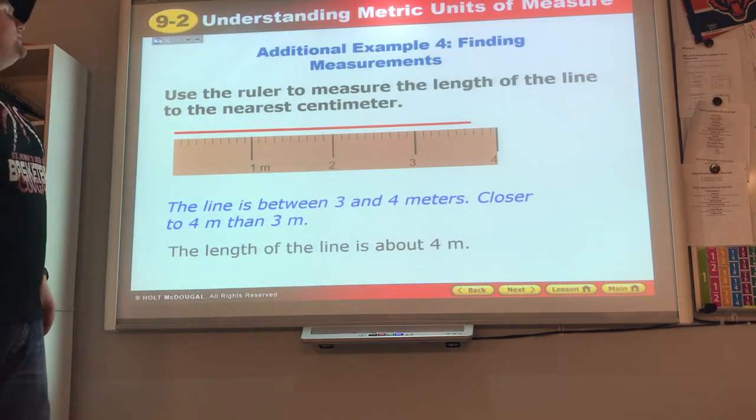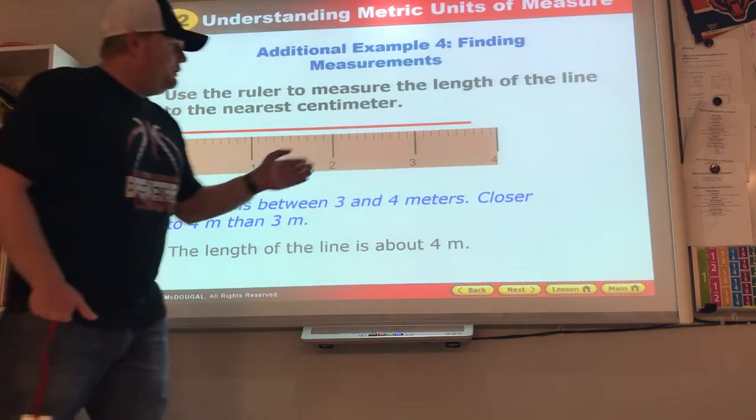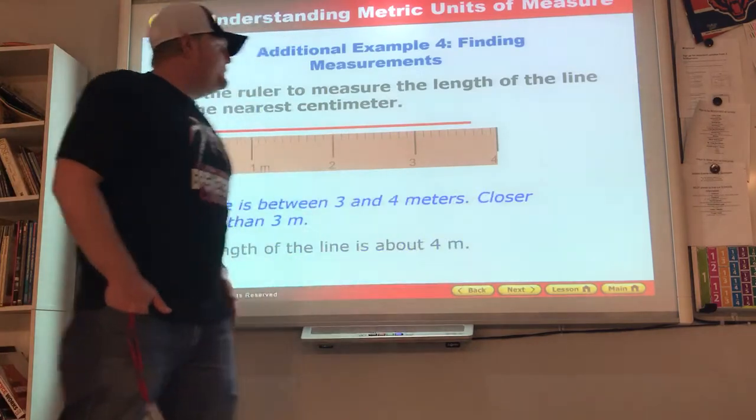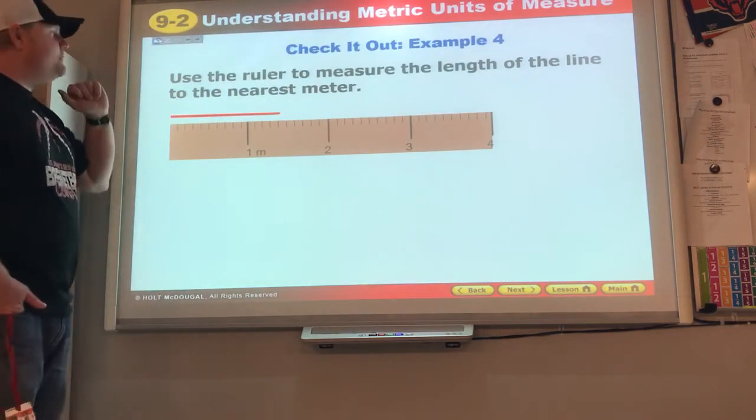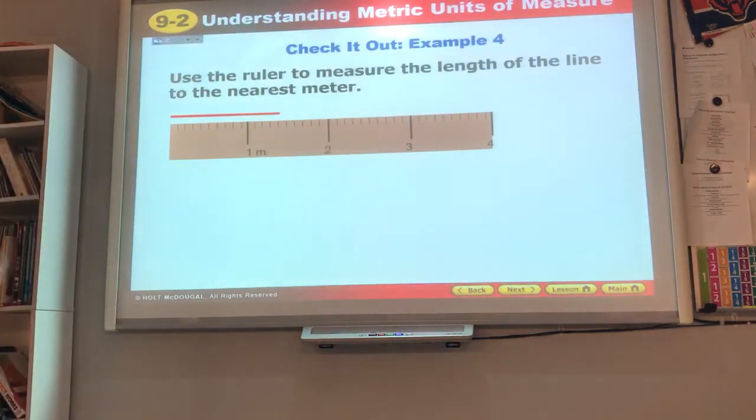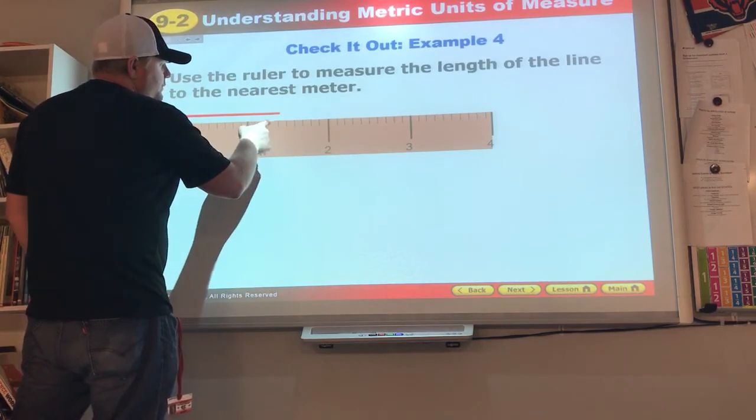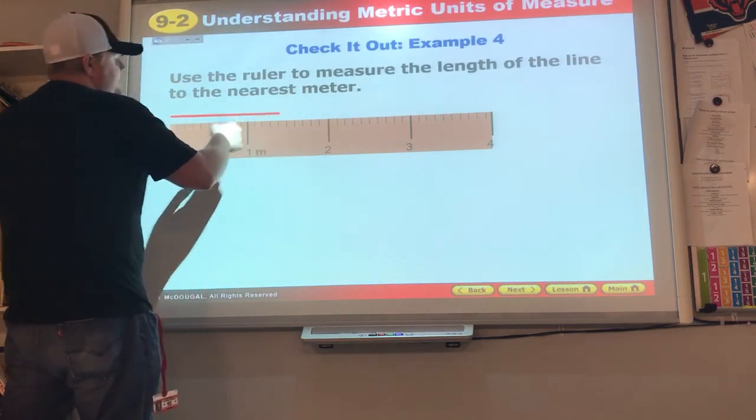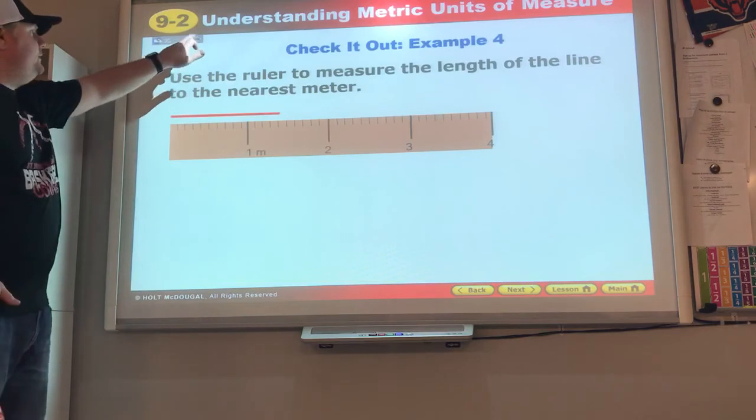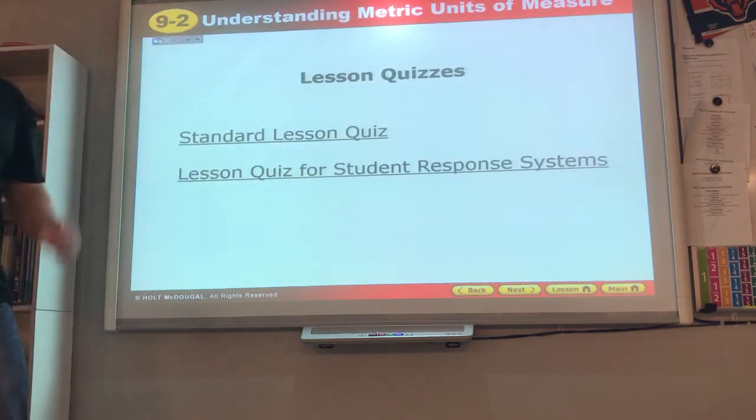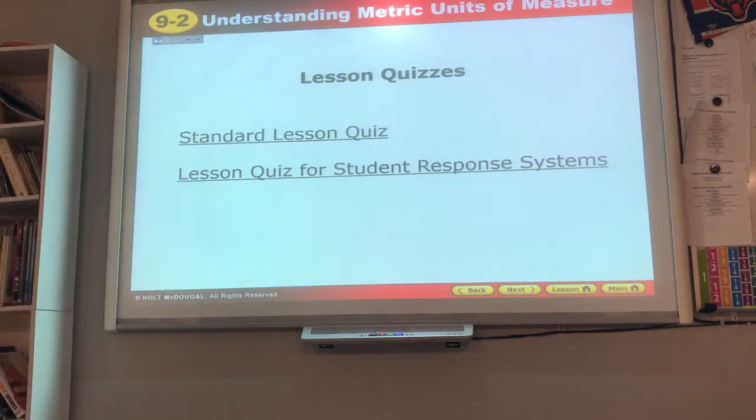So the length - oh, it says to the nearest centimeter, but they actually have you go to the meter. Well, I call it four meters. Use the ruler to measure the length of the line to the nearest meter. There are ten between these. This one gets you the one, two, three, four - it's a little less than half, so I'd say it's nearer to the one meter. We'll again let you try. Tomorrow we start conversions, changing it from one thing to the next.